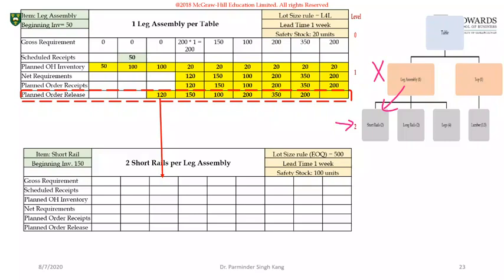In simple terms, we need level two items to manufacture level one items, so quantities will be determined based upon level one. The most common mistake I've seen in assessments is that when working at level two, students still use the MRP data to determine gross requirements. When you're at level two, use the planned order release data from level one for the parent item. When you're at level four, use the planned order release data from the parent items at level three, and so on.